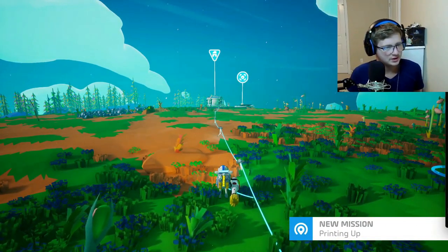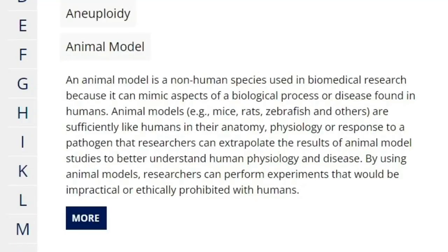Animal model! An animal model is a non-human species used in biomedical research because it can mimic aspects of a biological process or disease found in humans. Animal models — mice, rats, zebrafish, triggerfish, lions, giraffes, bears, cheetahs, wild buffalo, and others — are sufficiently like humans in their anatomy, physiology, or response to a pathogen that researchers can exploit. The results of animal model studies help better understand human physiology and disease. By using animal models, researchers can perform experiments that would be impractical or ethically prohibited with humans.